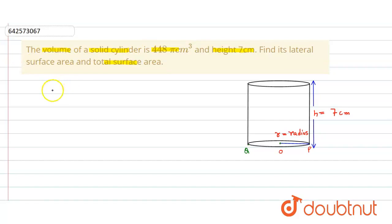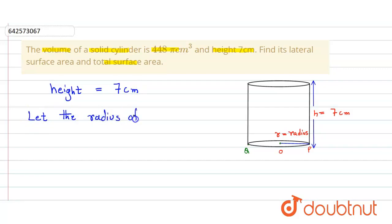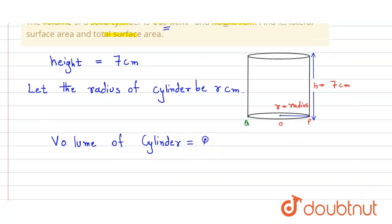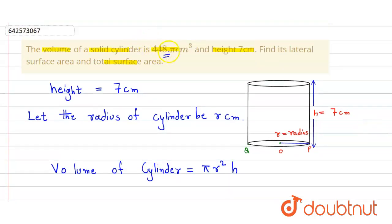It is given that height h is equal to 7 centimeter. Let the radius of the cylinder be r centimeter. It is given that volume is equal to 448π centimeter cube. The formula for volume of a cylinder is π r square into h, where r is the radius and h is the height.